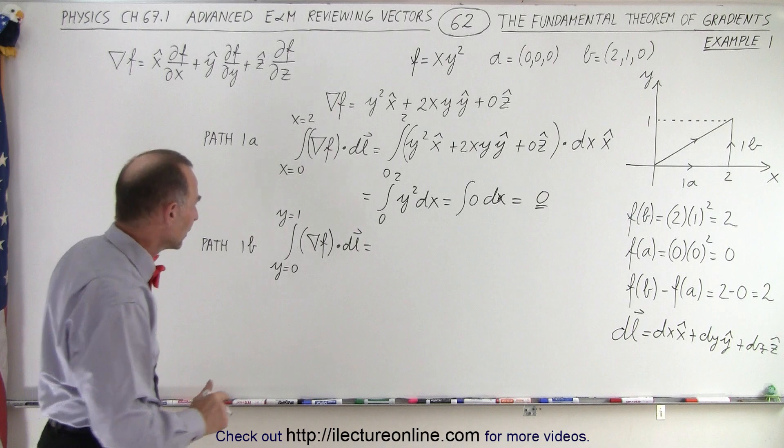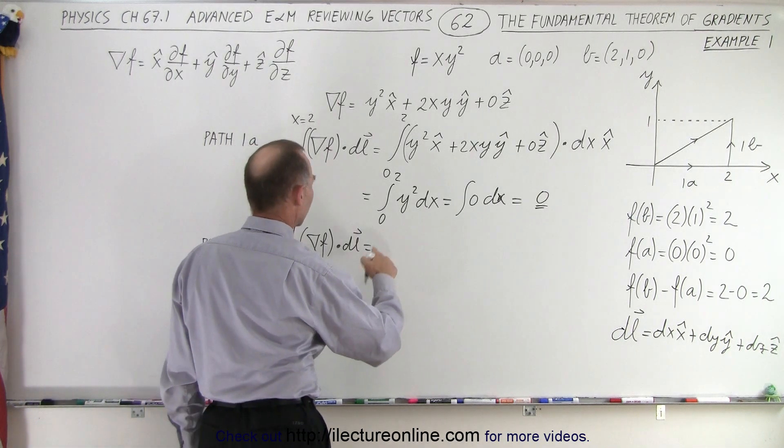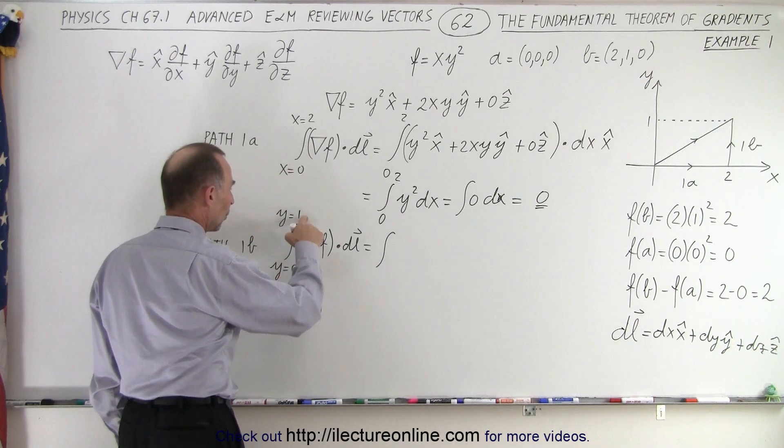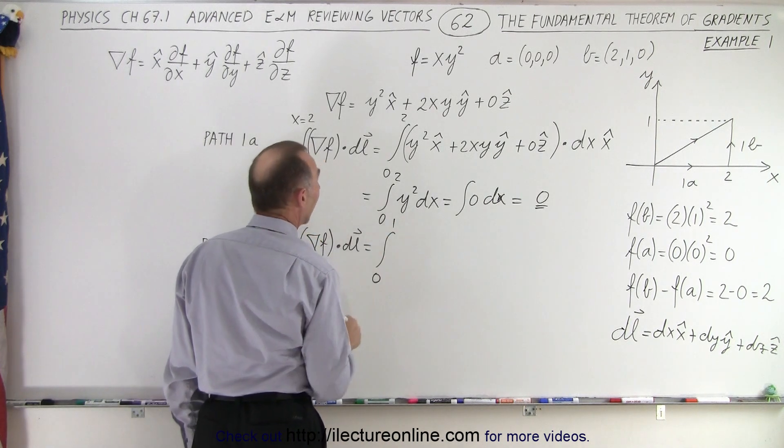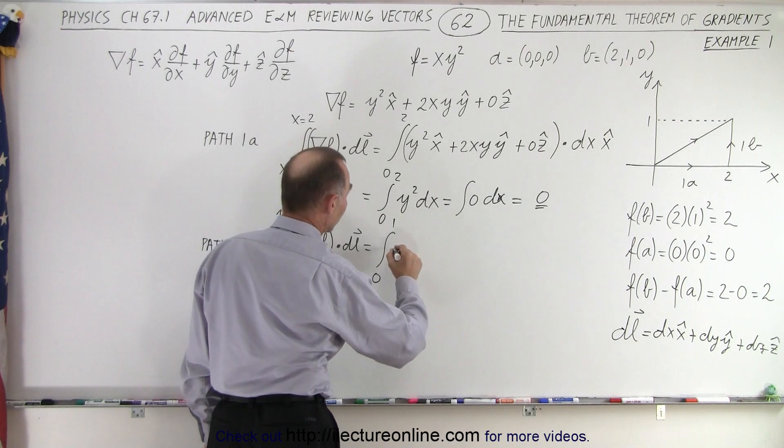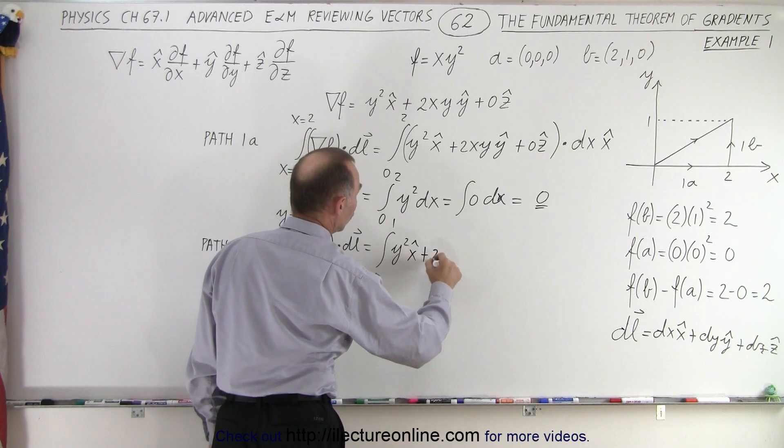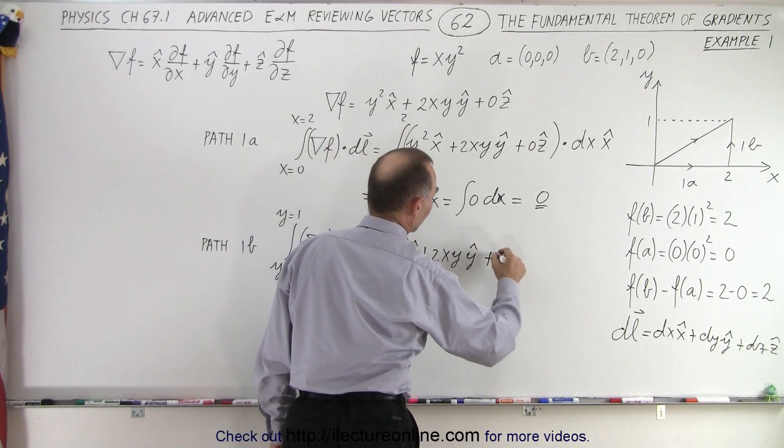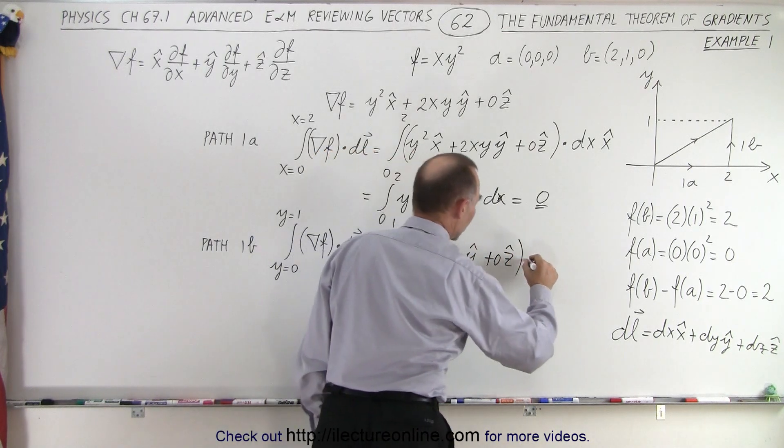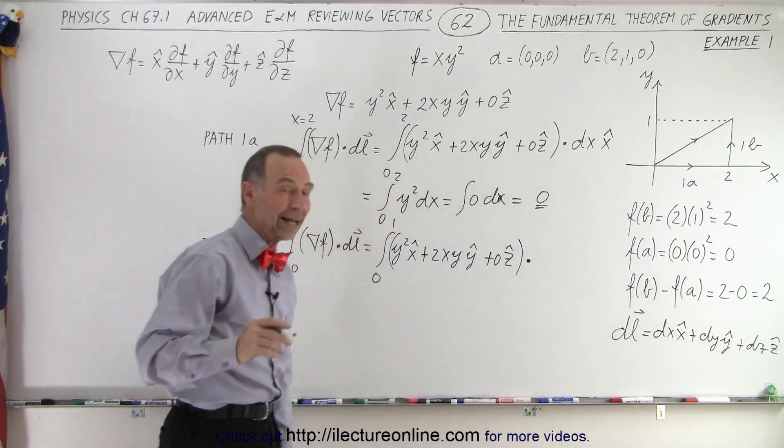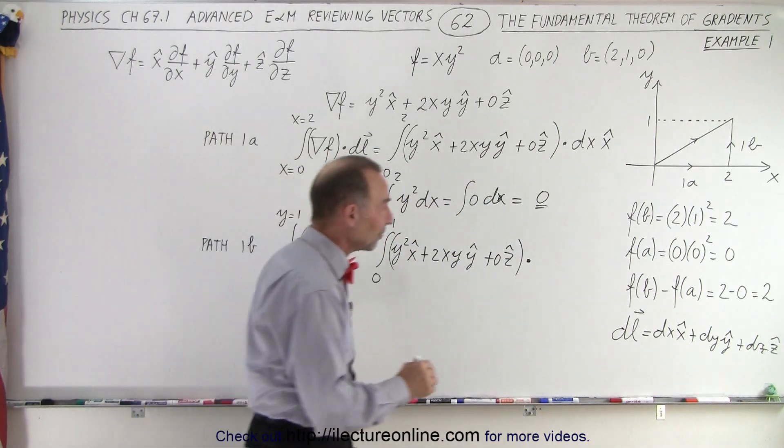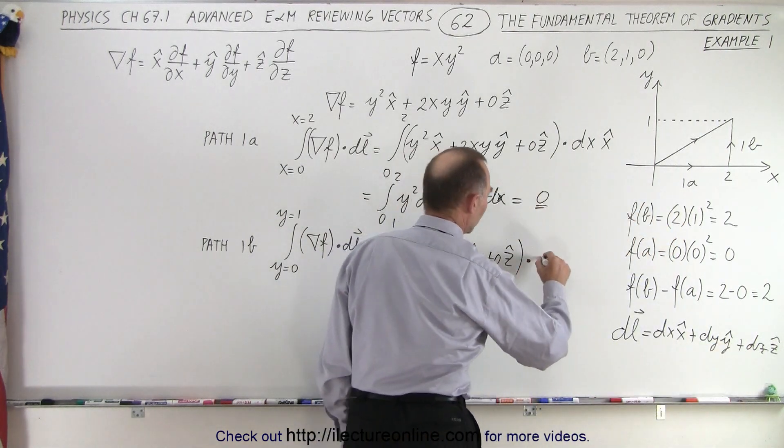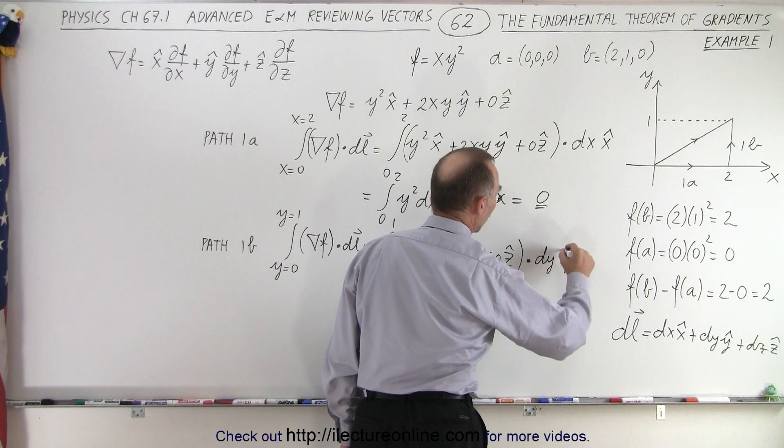All right, now let's do path 1b. So in this case, we're again going to take the integral. Now this is going to be from y equals 0 to y equals 1. And we're going to have the same gradient, so this will be y squared in the x direction, plus 2xy in the y direction, plus 0 in the z direction. And we're going to take the dot product with dl, but the only component there that survives is the middle component. Only y is changing. X and z are not changing. So this will be dy in the y direction.